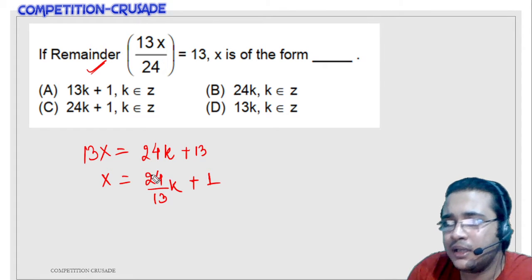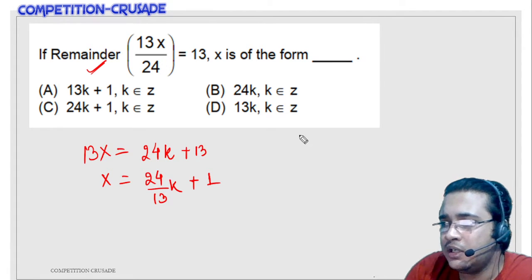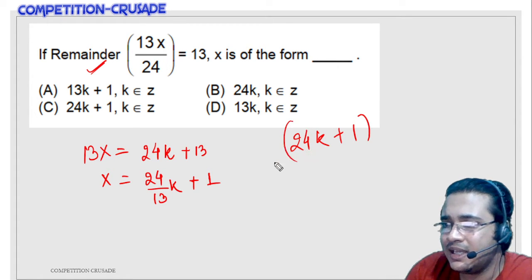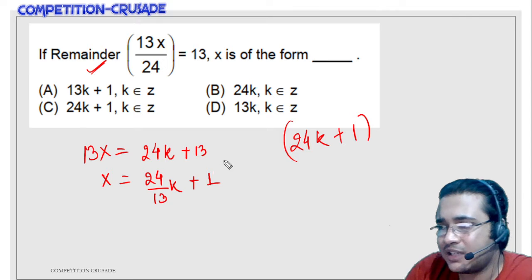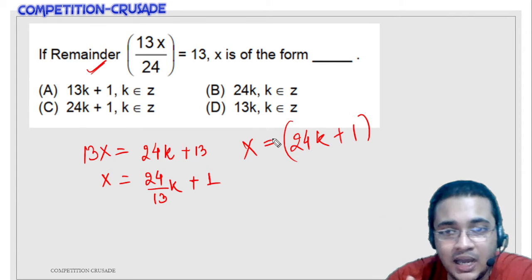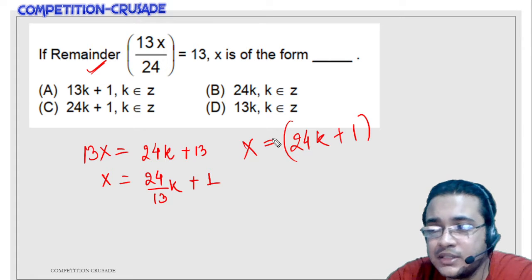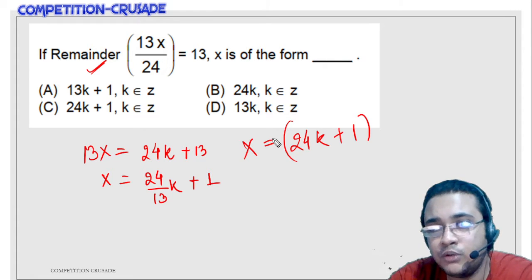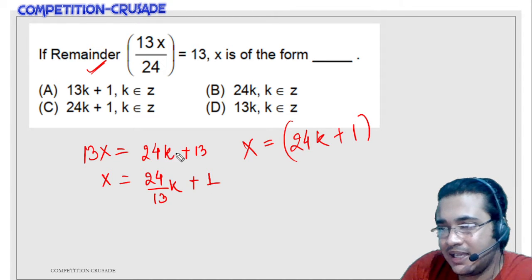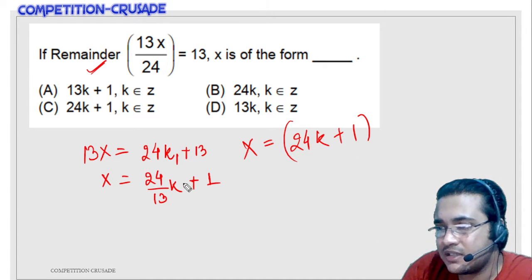This thing is actually 24k plus 1. This x is actually of the form 24k plus 1. And why am I saying that this is 24k plus 1 and not 24 by 13k plus 1? Because this k I can just transform.